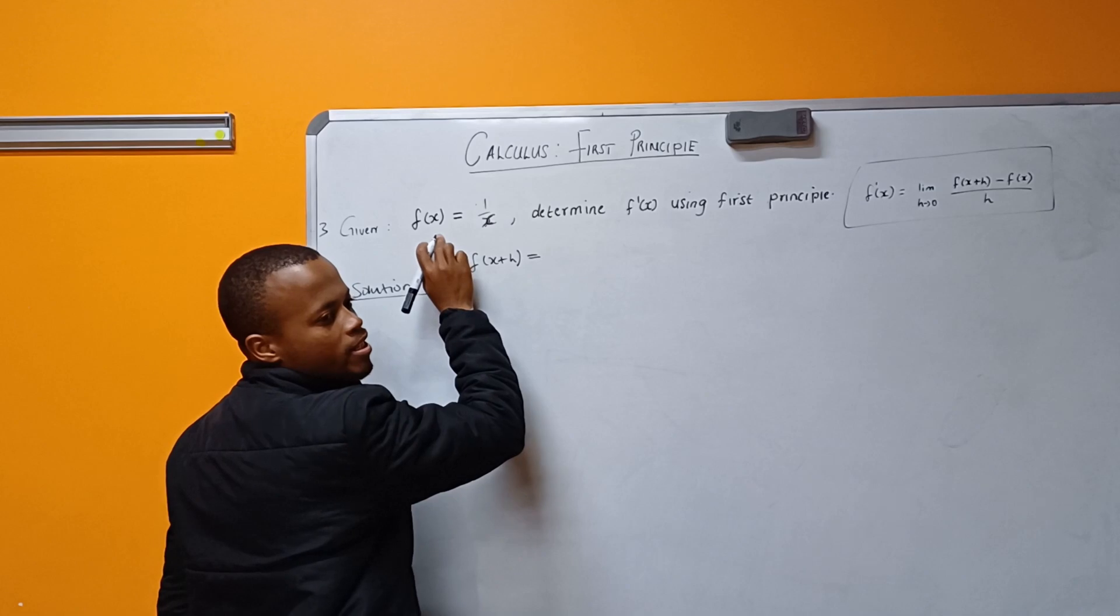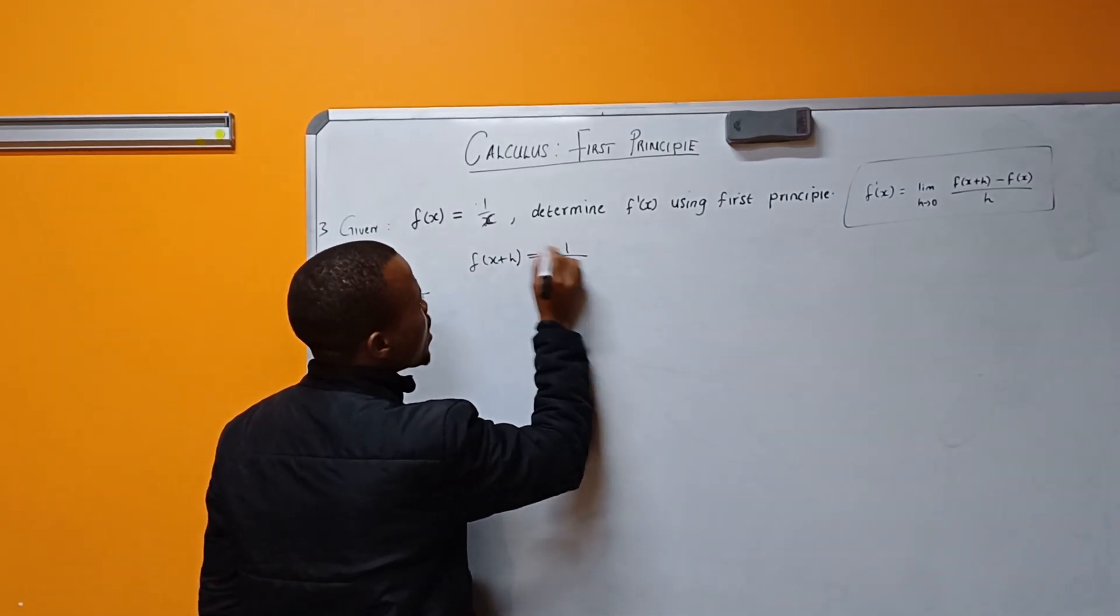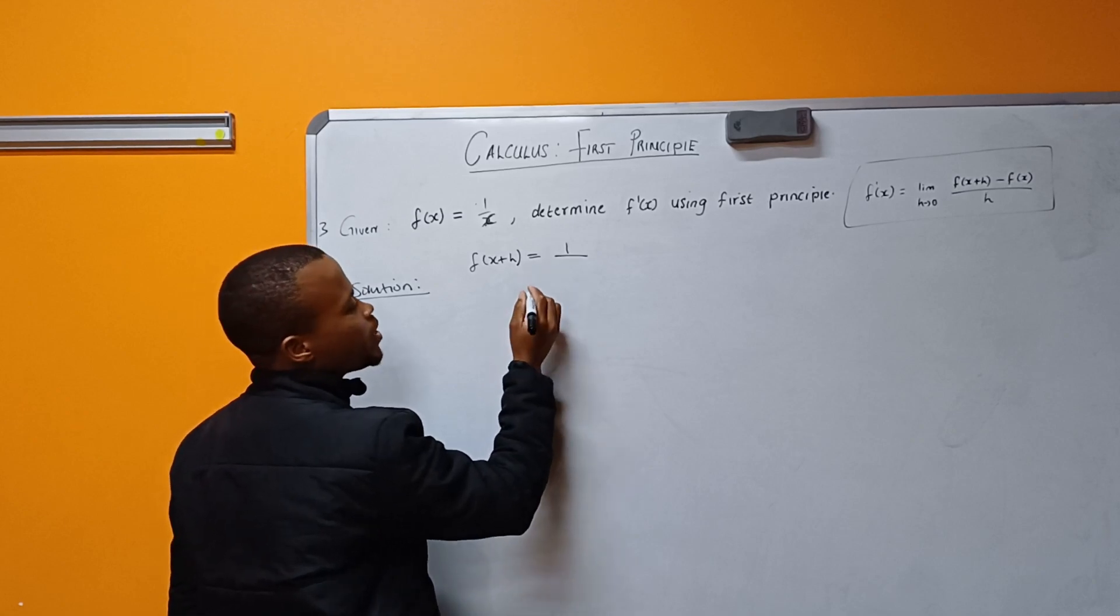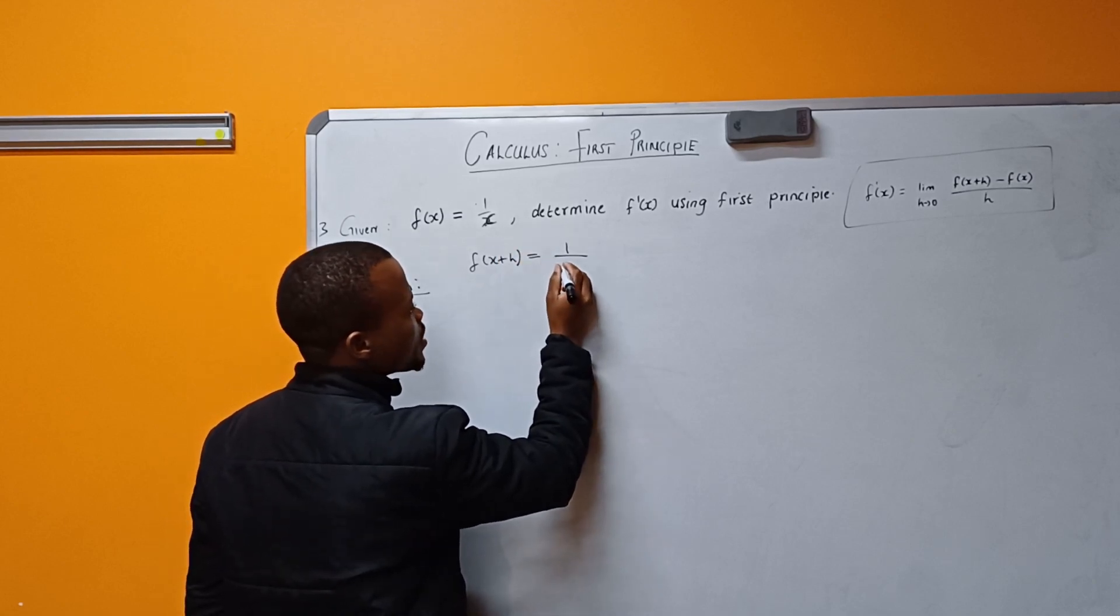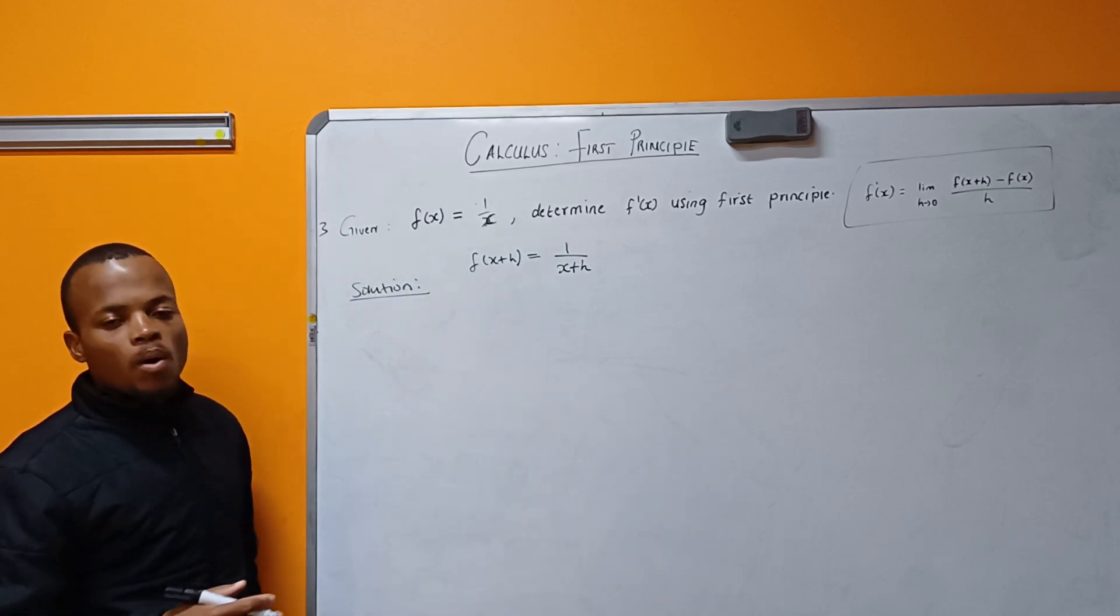Where I see x, I plug in x+h. So here x is in the denominator, so instead of x I replace it with x+h. So this is my f(x+h). Now I want to find the first differentiation.